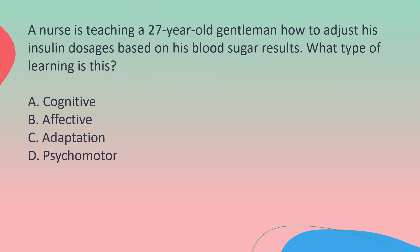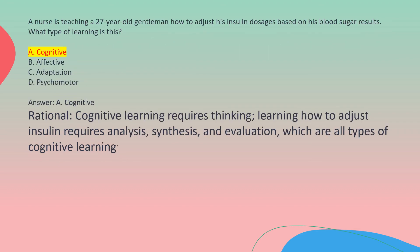A nurse is teaching a 27-year-old gentleman how to adjust his insulin dosages based on his blood sugar results. What type of learning is this? A. Cognitive. B. Affective. C. Adaptation. D. Psychomotor. Answer: A. Cognitive. Rationale: Cognitive learning requires thinking. Learning how to adjust insulin requires analysis, synthesis, and evaluation, which are all types of cognitive learning.